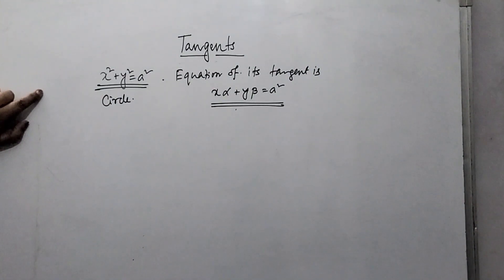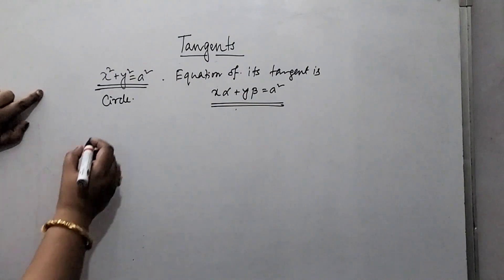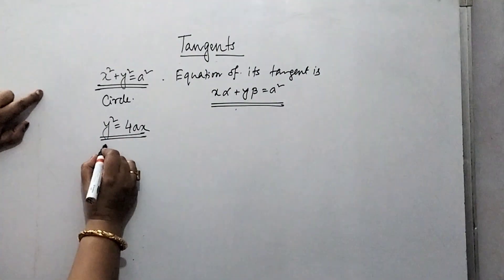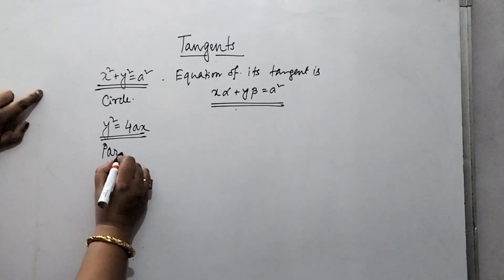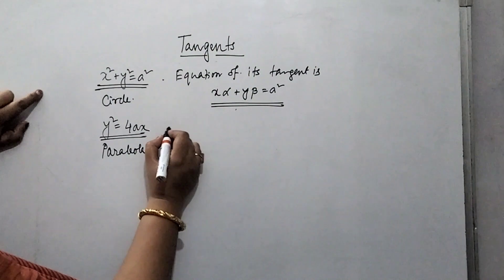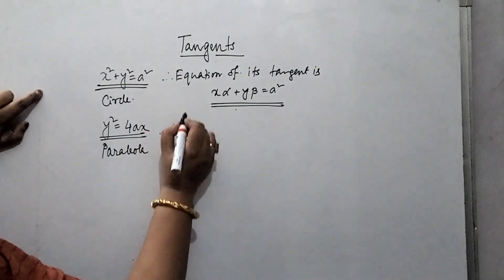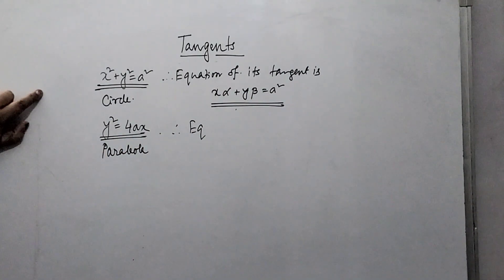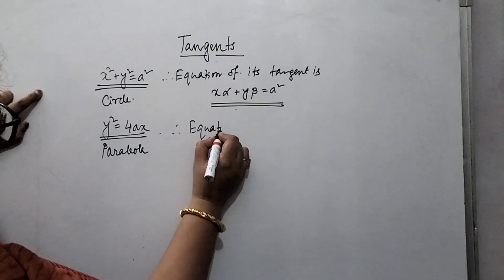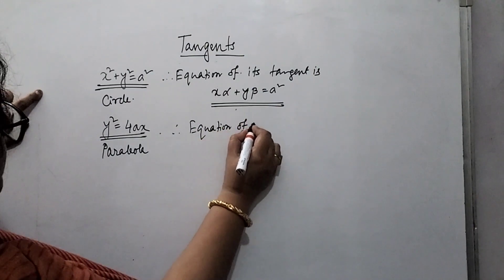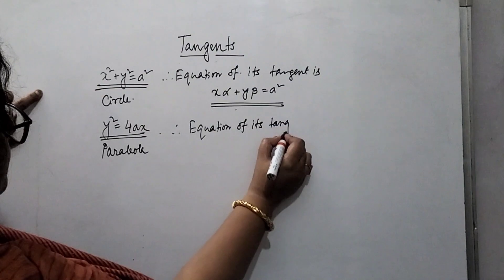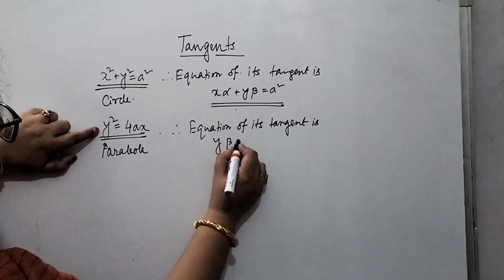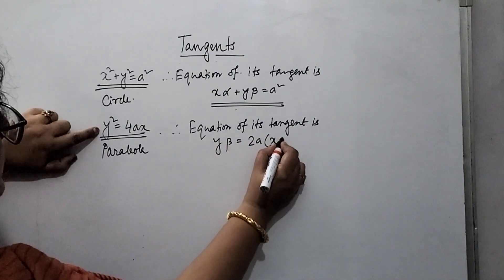Suppose we consider the equation of a parabola, which is a non-central conic: y² = 4ax. And considering any arbitrary point (alpha, beta) on it, the equation of its tangent is y·beta = 2(x + alpha).